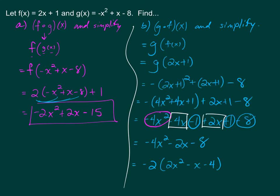Here is the completely worked out answer for part B. g composed f of x is the same thing as writing g of f of x. Again there are 3 different letters here — let's knock that down to 2 by substituting 2x plus 1 in for f of x. Now we have 2 different letters still. Looking at the function g of x, whenever this x gets replaced, these x's get replaced. So this is negative (2x plus 1) squared plus (2x plus 1) minus 8.